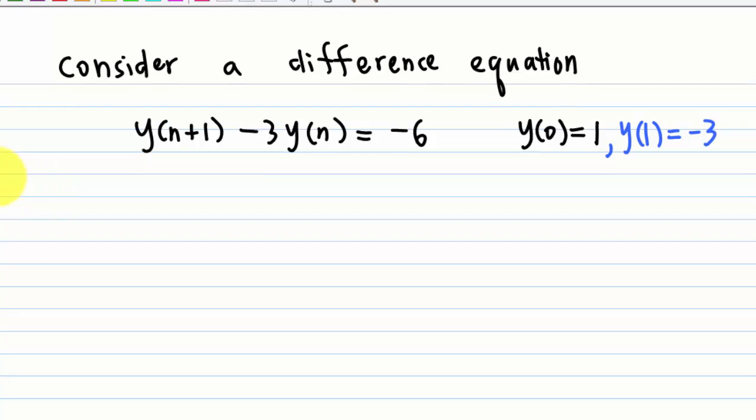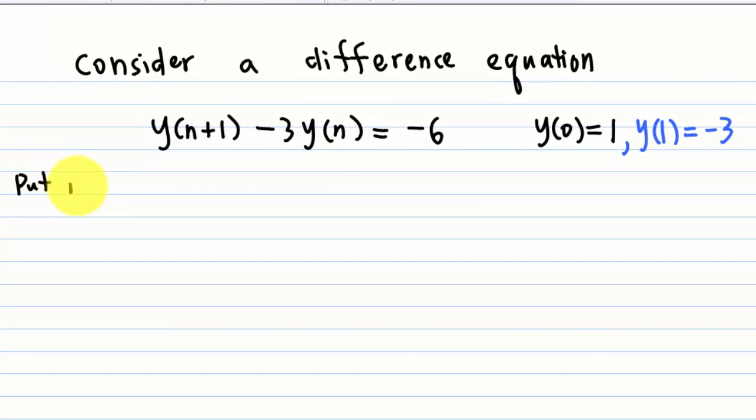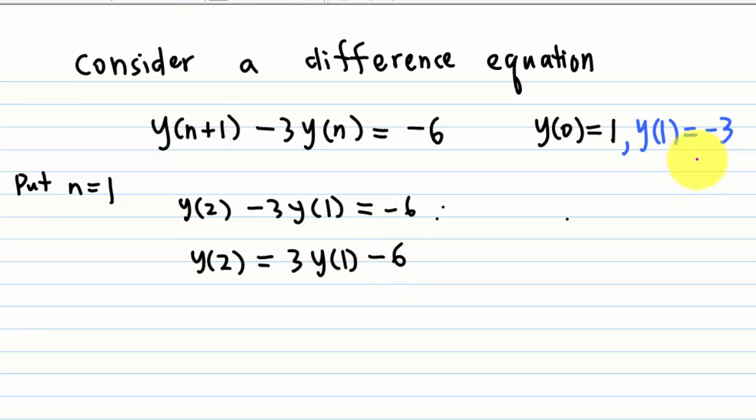Now, continue the calculation. Put n=1. Then y(n+1) becomes y(2) - 3y(1) = -6. Therefore, y(2) = 3y(1) - 6. But y(1) = -3, so this equals 3(-3) - 6, which equals -15.